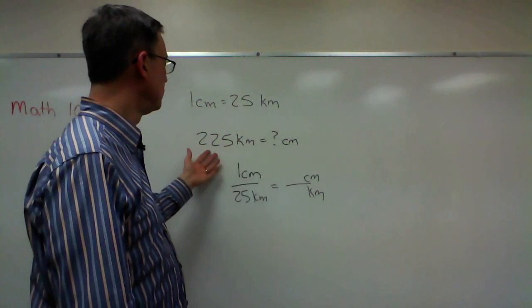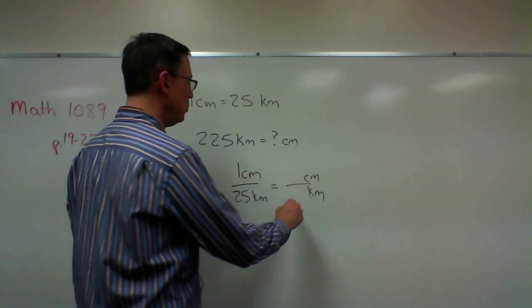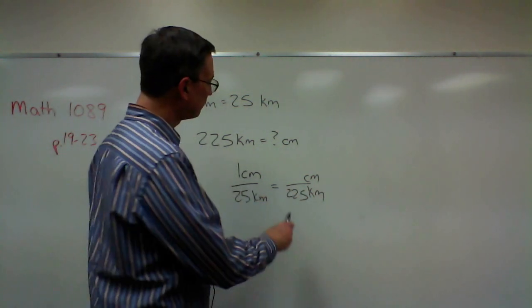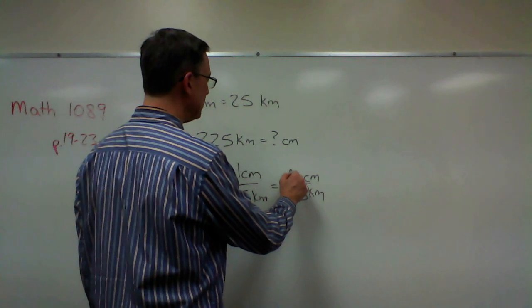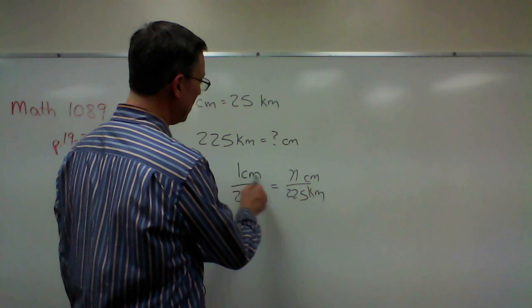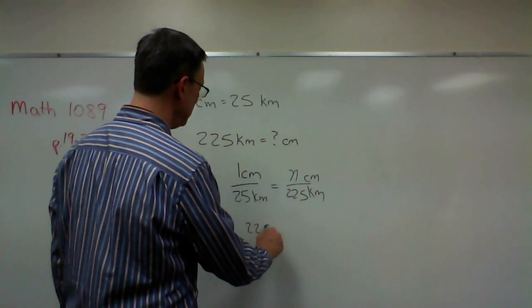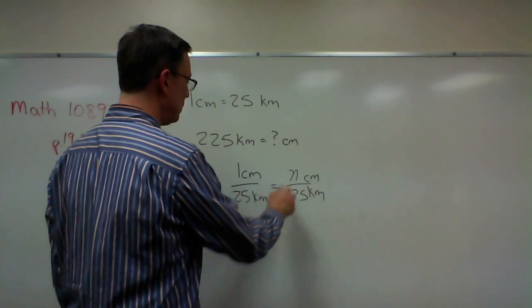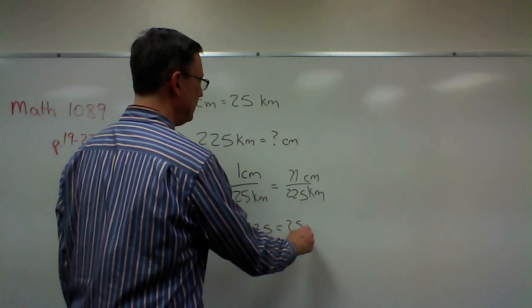So one centimeter is equal to 25 kilometers. We're trying to figure out how many centimeters would be equal to 225 kilometers. So to find, we'll call this N for the unknown number, then we'll cross multiply. So 225... one times 225 equals 25N.